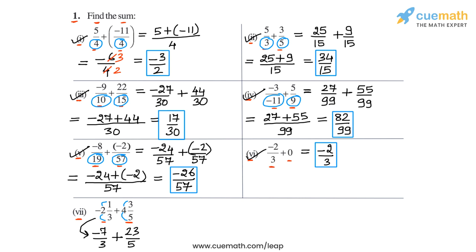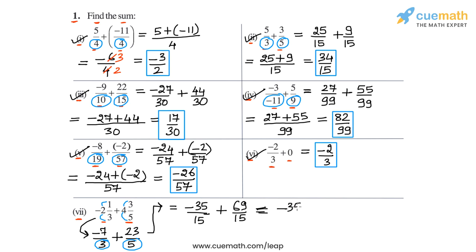Now the denominators are 3 and 5, and their LCM is 15. So let's write both as equivalent rational numbers with denominator 15. -7/3 can be written as -35/15 — we multiply the first number by 5 above and below. And 23/5 can be written as 69/15. Now we add the numerators: -35 + 69 = 34. So we get 34/15. In part 7, the sum is 34/15. That completes part 7.